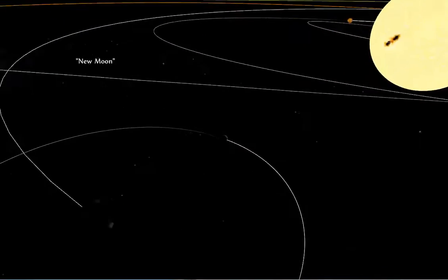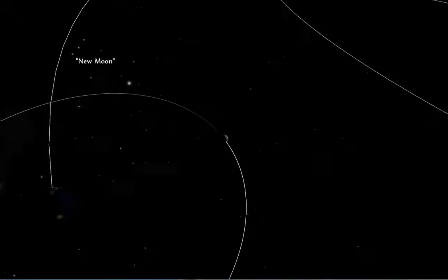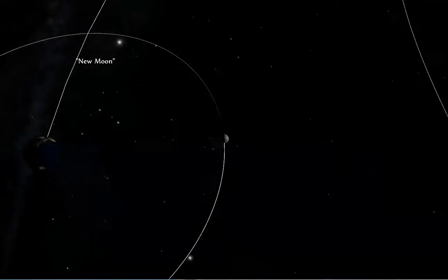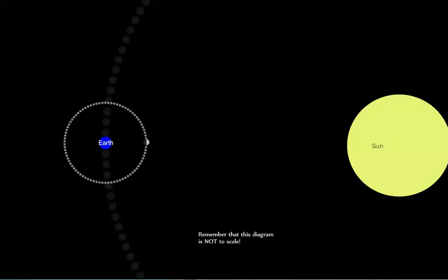The moon is between the Earth and the sun. This is what things look like from overhead. Remember that this diagram is not drawn to scale.